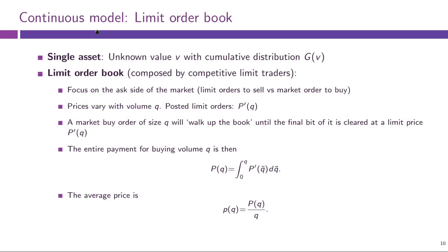The model looks as follows. As usual, we have a single asset in the market with some fundamental value V, unknown to most traders. All traders agree on the distribution of this fundamental value V, which we denote G of P. There are competitive limit traders that compose a limit order book — so before we had competitive dealers, now we have competitive limit traders.